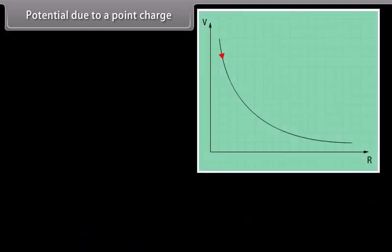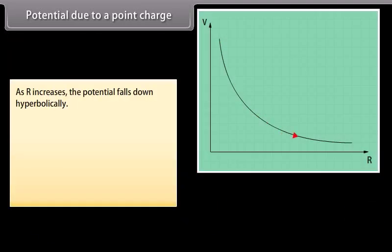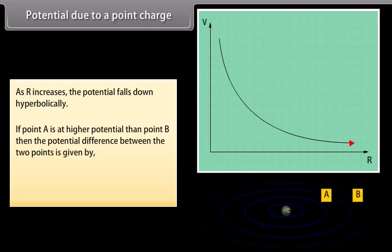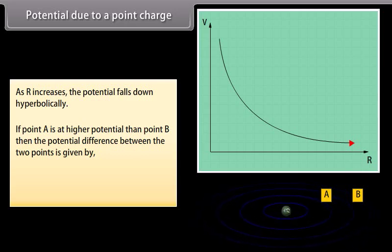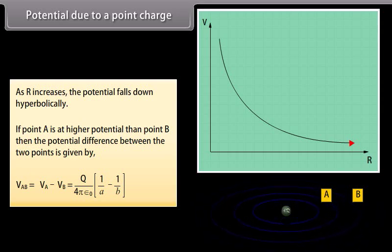We can show in the graph that as R increases, the potential falls down hyperbolically. If point A is at higher potential than point B, then the potential difference between the two points is given by V_AB equals V_A minus V_B. Putting the values of V_A and V_B, we get V_AB equal to Q over 4π ε₀ multiplied by (1/A minus 1/B).